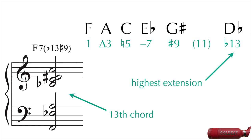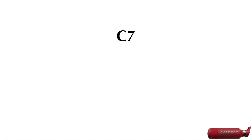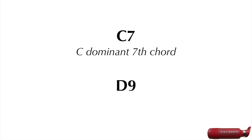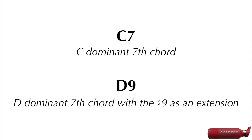In addition, dominant 7th chords are usually referred to without actually saying the word dominant. For example, the chord label C7 just means a C dominant 7th chord. The label D9 just means a D dominant 7th chord with a natural 9 as an extension.